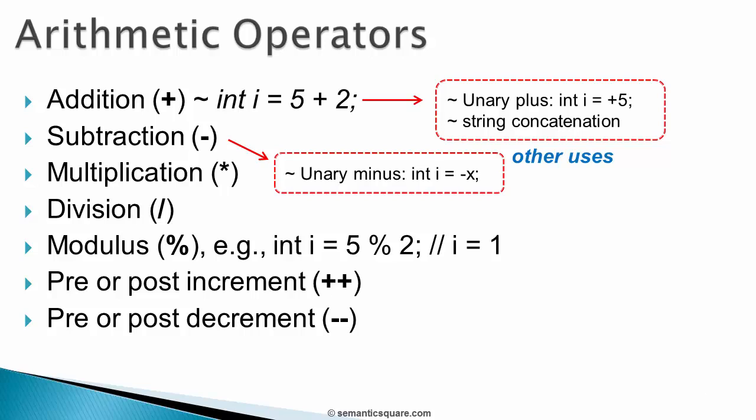Next, for multiplication, a star symbol is used. And for division, a forward slash is used. For modulus, a percentage symbol is used. Modulus operation gives the remainder of division as we can see in this example, where phi mod 2 results in a value of 1.